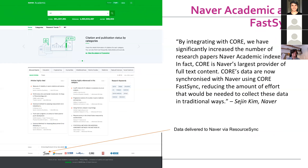Naver is the top search provider in South Korea — they are bigger than Google there. CORE is their biggest data supplier via Core FastSync. They say that by integrating with CORE they have significantly increased the number of research papers Naver Academic indexes, and that CORE is Naver's largest provider of full-text content. Core data are now synchronized with Naver using Core FastSync, reducing the effort that would be needed to collect data by going to individual repositories and publishers.